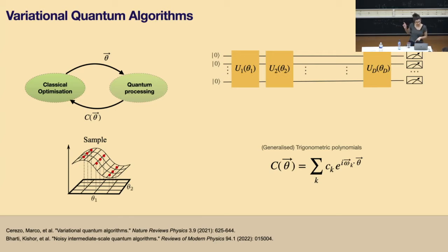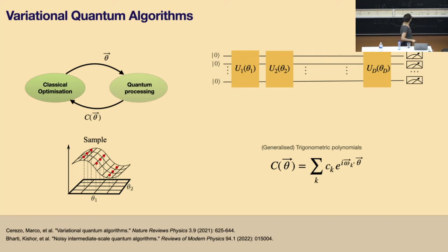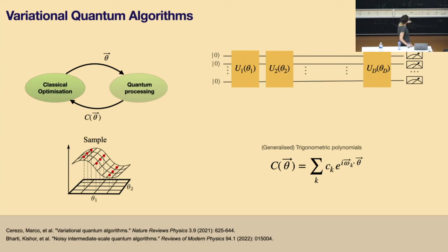Before I go there I need to emphasize a couple of points about variational algorithms — specifically, cost functions given by parametrized quantum circuits can be viewed as generalized trigonometric polynomials by expanding the parametrized unitaries, and what that means is that they have a Fourier decomposition with a bounded frequency spectrum. Sometimes from the structure of the circuits themselves you can deduce the boundaries of this spectrum.